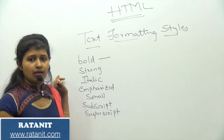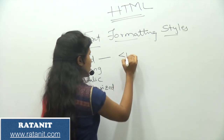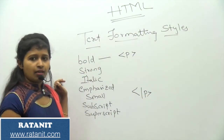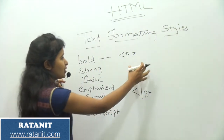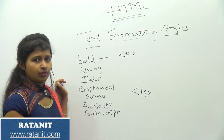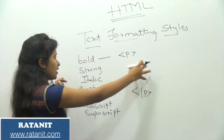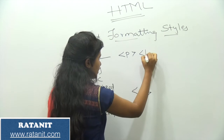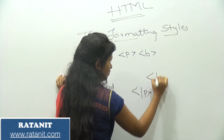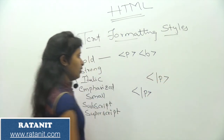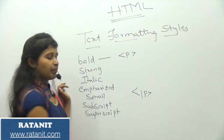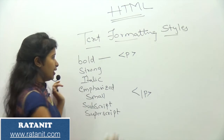Coming to the first one — bold. If I want to keep my text in bold format, let's suppose I am having a paragraph. I need to add some content in this paragraph and I want to keep my text in bold. For that I need to use the bold tag — the B tag, which is an open and close tag.